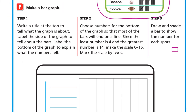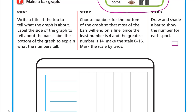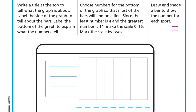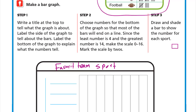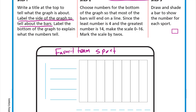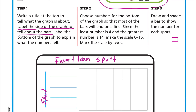Let's look at the steps. Step number one: write a title at the top to tell what the bar graph is about. The title here is 'Favorite Team Sport.' Next, label the side of the graph to tell about the bars. On the side we write 'Sport,' and here we list the sports: soccer, basketball.